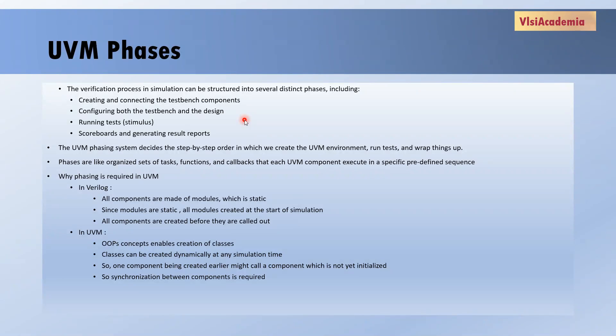So basically, what UVM does is it divides all the processes required for verification into subgroups and, based on the order of execution, puts them into some UVM phase. So based on the UVM phase, these processes will be executed in that order only. So basically, phases are like a set of tasks or functions that each UVM component executes in a specific predefined sequence.